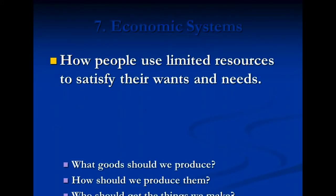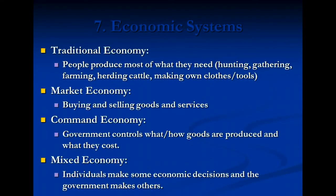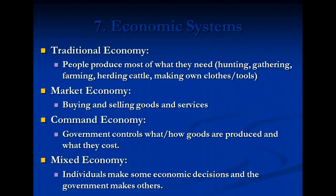The last element is economic systems — how people use limited resources to satisfy their wants and needs. What goods should be produced? How should they be produced? And who should get the things that are made? There are traditional economies, where people produce most of what they need; the market economy, where people buy and sell goods and services; a command economy, where the government controls what and how goods are produced and what they cost; and a mixed economy, where individuals make some economic decisions and the government makes others.